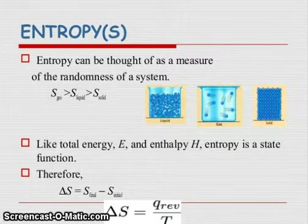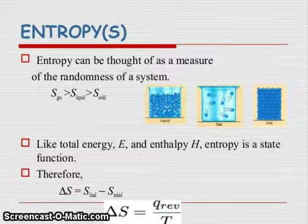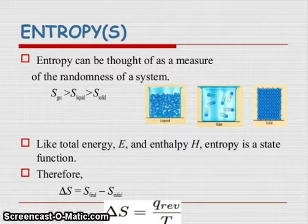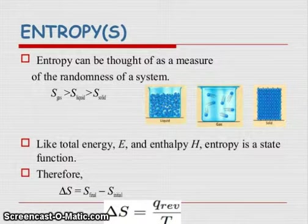Like total energy E and enthalpy H, entropy is a state function. Therefore, ΔS equals S total minus S initial, and ΔS equals Q reversible divided by T.